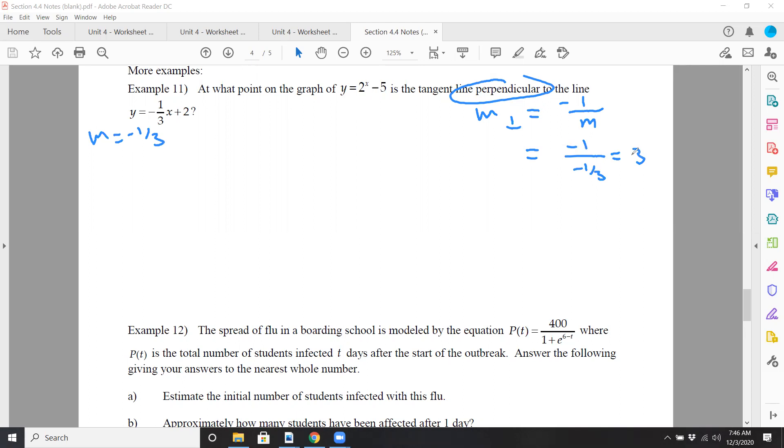So we have to take our derivative. So y prime will be 2 to the x times natural log of 2. And we have to set that equal to 3. Because remember, the derivative is going to be the slope of the tangent line, but we have to be perpendicular to this. We want a tangent perpendicular to that, so we had to go to the slope of 3.